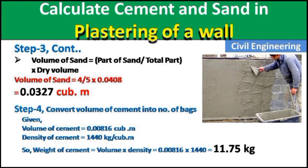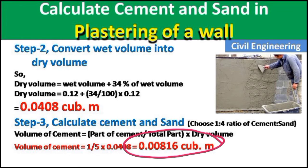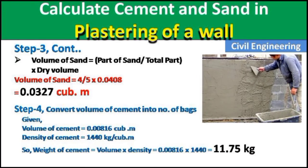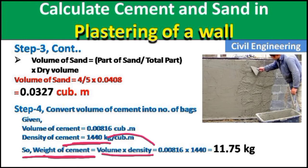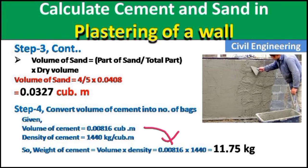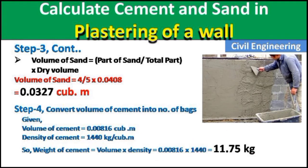In step 4, we convert the volume of cement into number of bags. The volume of cement is 0.00816 cubic meters. The density of cement is 1440 kg per cubic meter. Weight of cement = volume × density = 0.00816 × 1440 = 11.75 kg. We have now converted the volume of cement into kilograms.